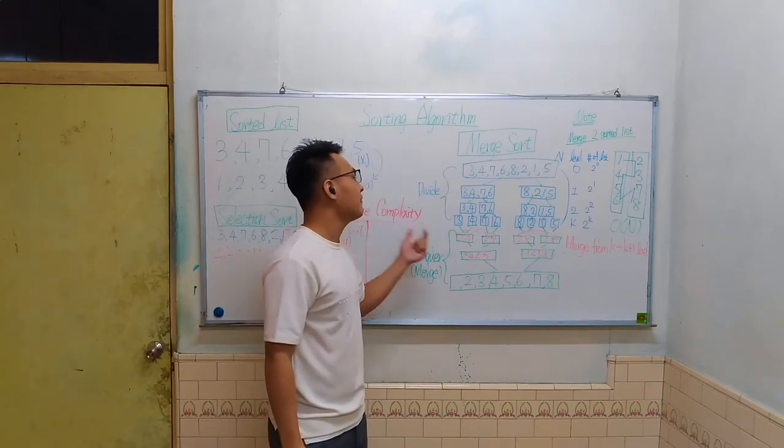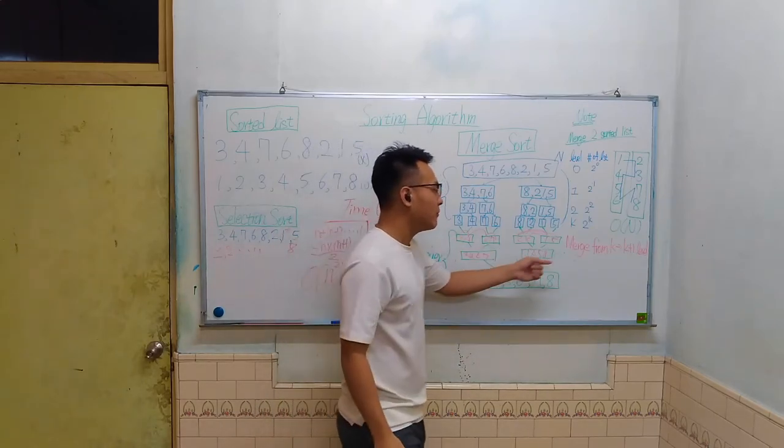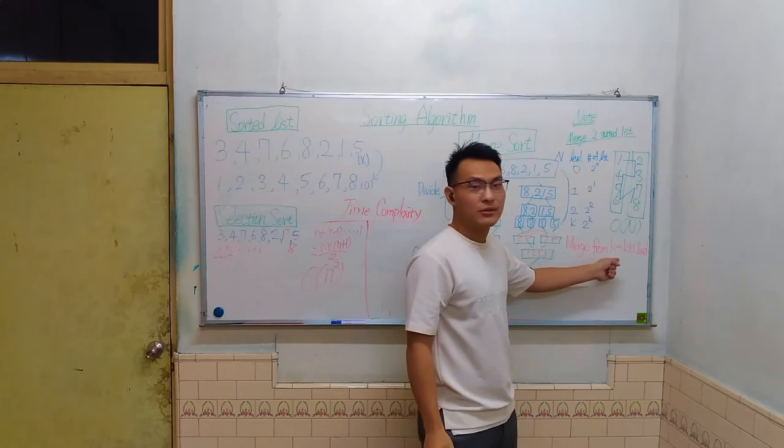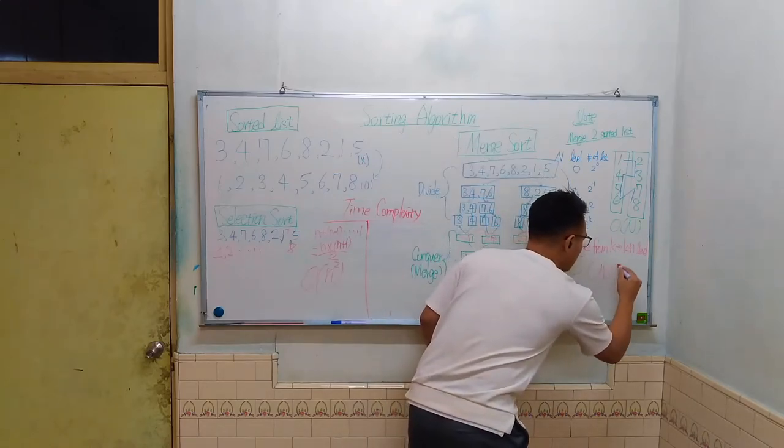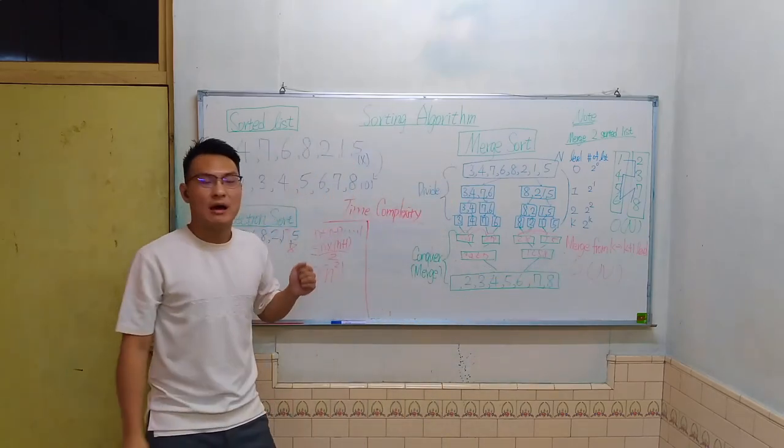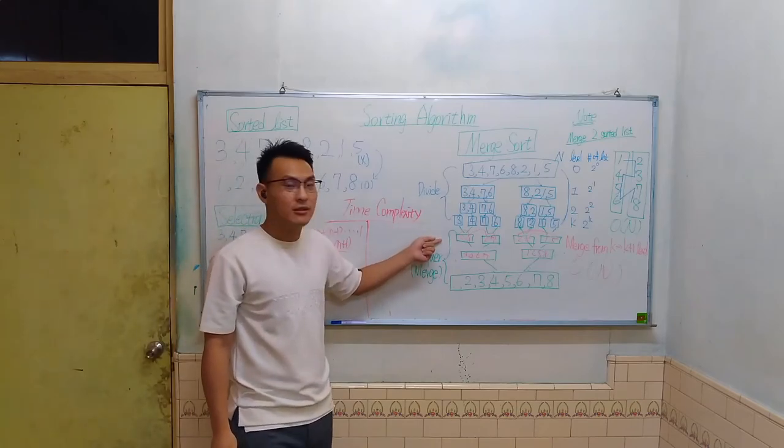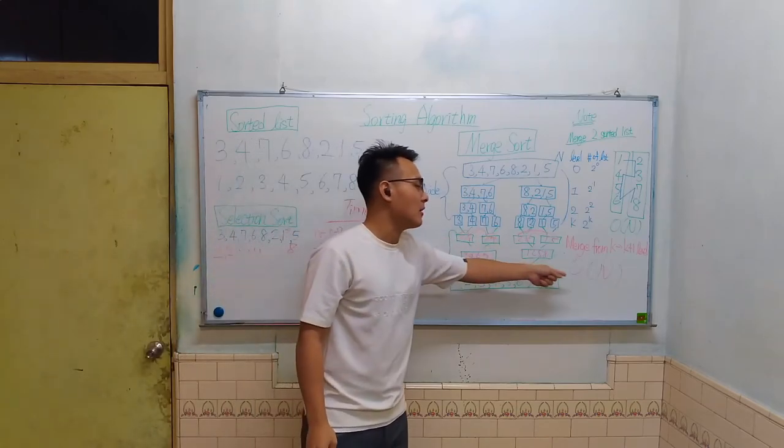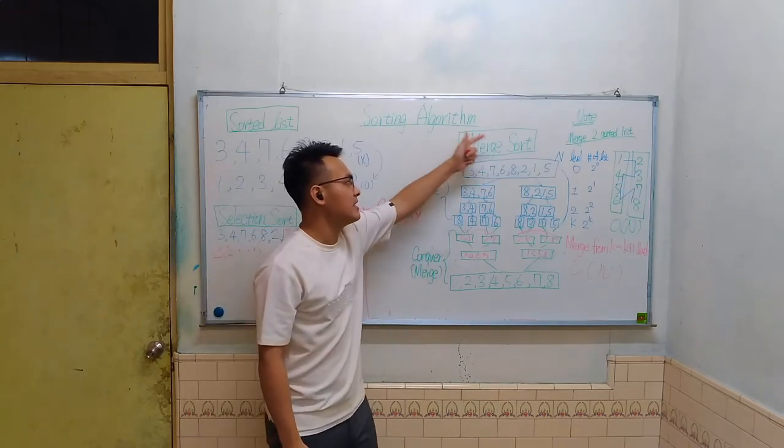And therefore, if we just focus on one level, if we want to merge from level k to level k plus 1, it only takes O(N) time to finish this process. So now if we want to calculate the total complexity, we already know a level will take O(N) time to finish. And the second question is how many levels are in this data structure.